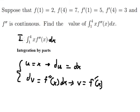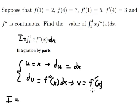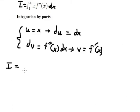For the integration we have u multiplied by v and we put the bounds from 1 to 4, minus the integration of v multiplied by du.